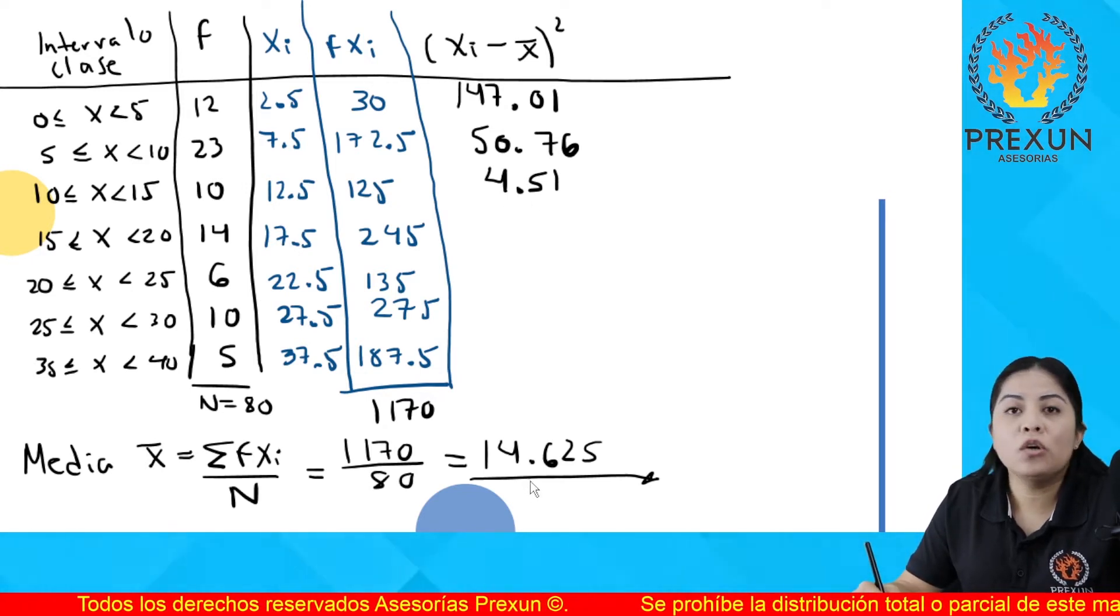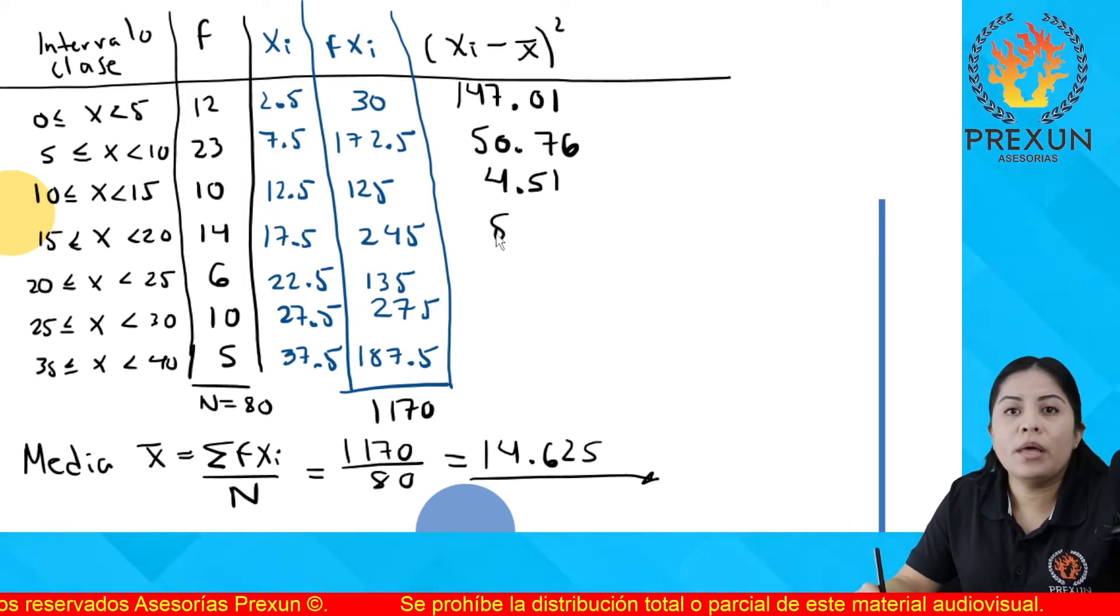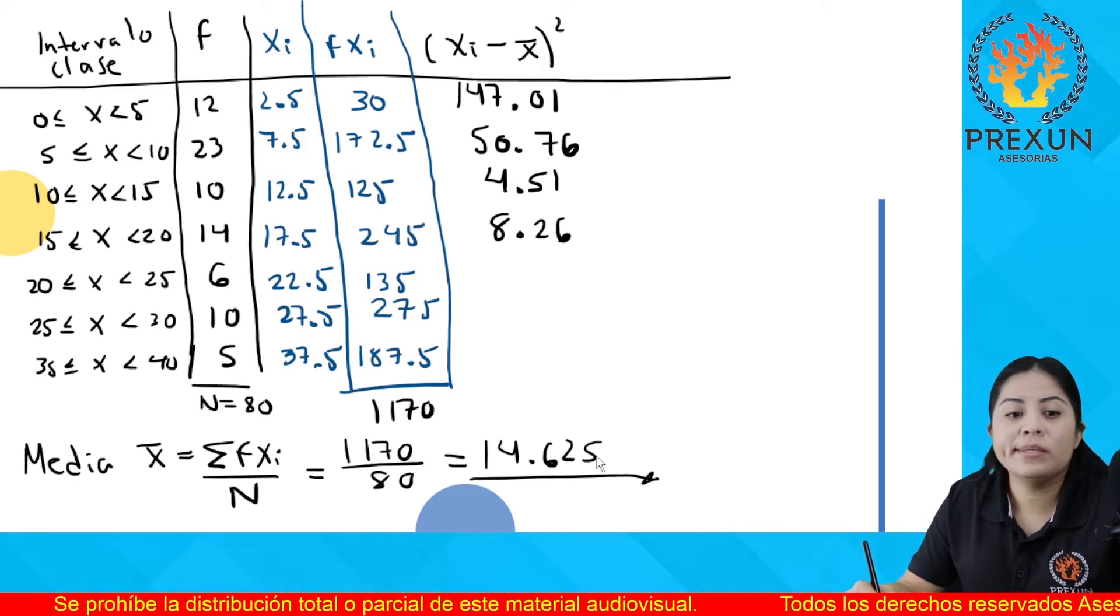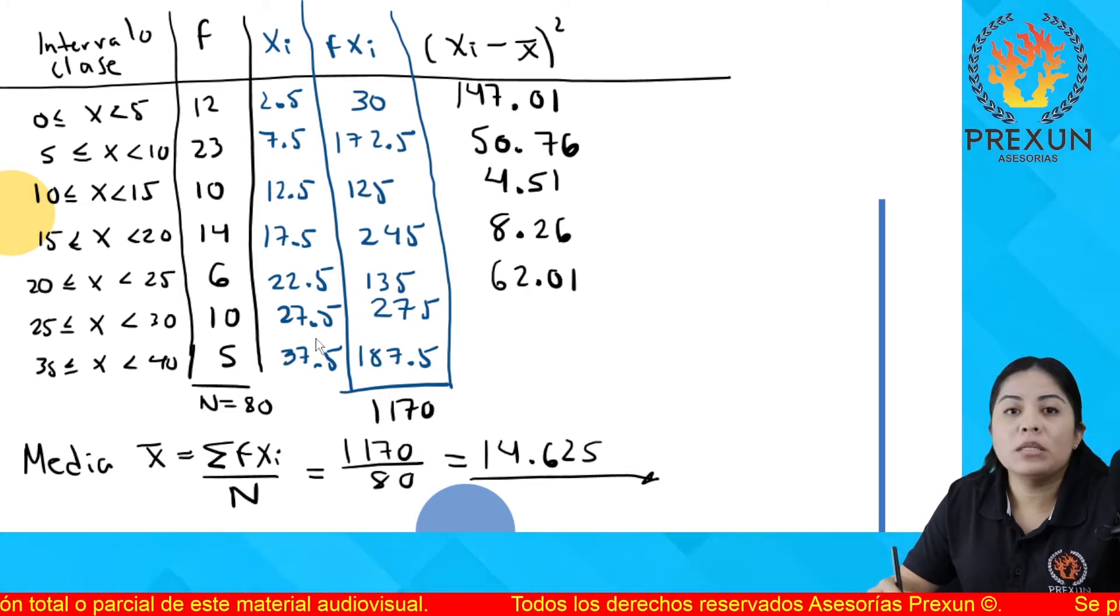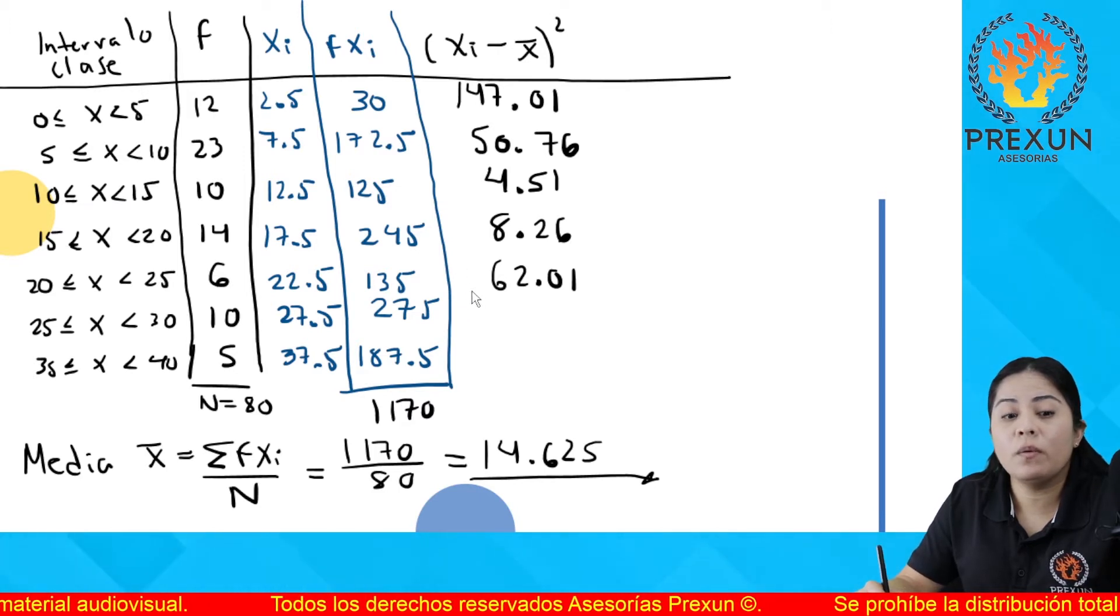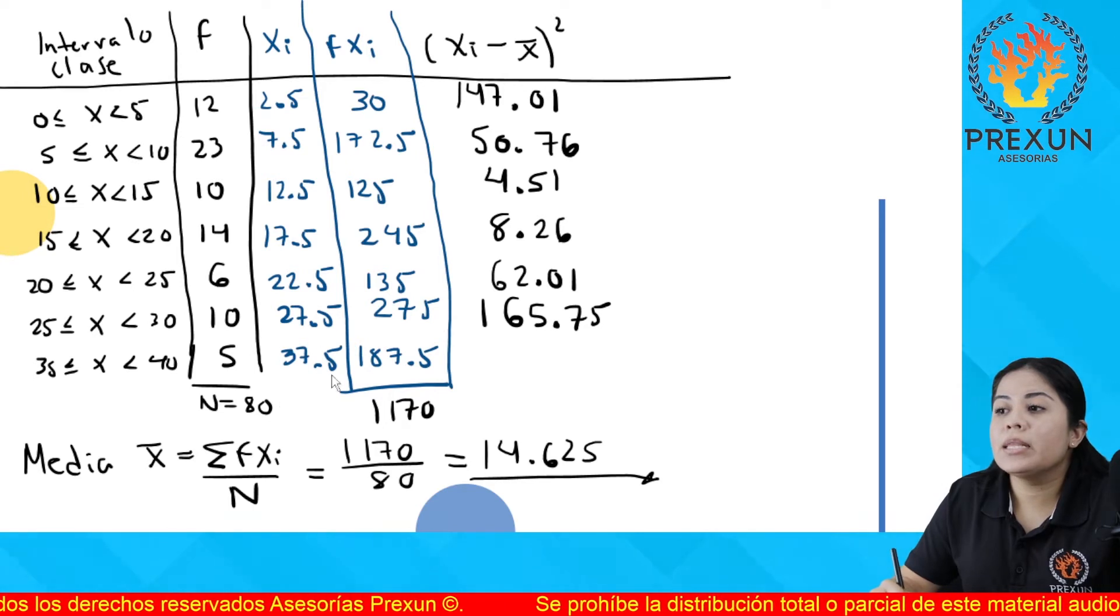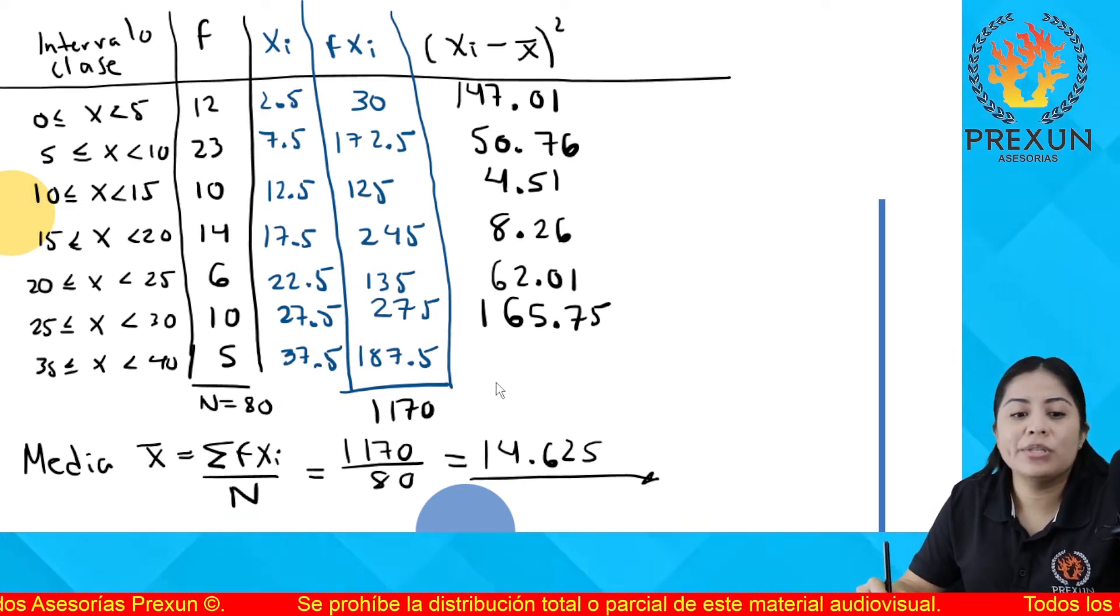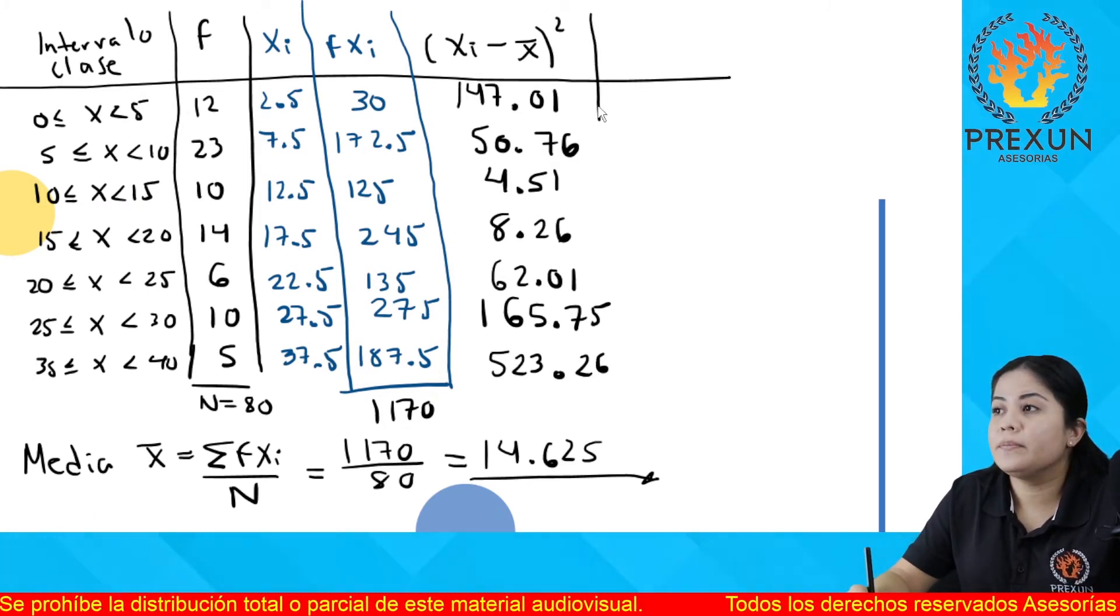El que sigue 17.5 menos 14.625 y ese resultado al cuadrado es 8.26. 22.5 menos 14.625 al cuadrado es 62.01. 27.5 menos la media y el resultado al cuadrado es 165.75. Y 37.5 menos 14.625 al cuadrado es 523.26.